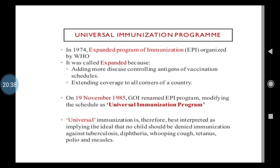In 1985, the name was changed from Expanded Program of Immunization to Universal Immunization Program, also called Universal Immunization Schedule. Universal immunization implies the ideal that no child should be denied immunization against six killer diseases. These six killer diseases are tuberculosis, diphtheria, whooping cough, tetanus, polio, and measles. Government hospitals are engaged in providing active vaccination to all children against these six killer diseases.